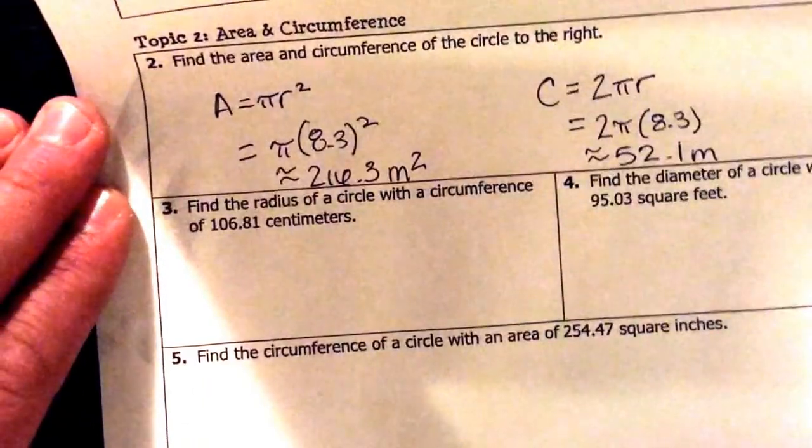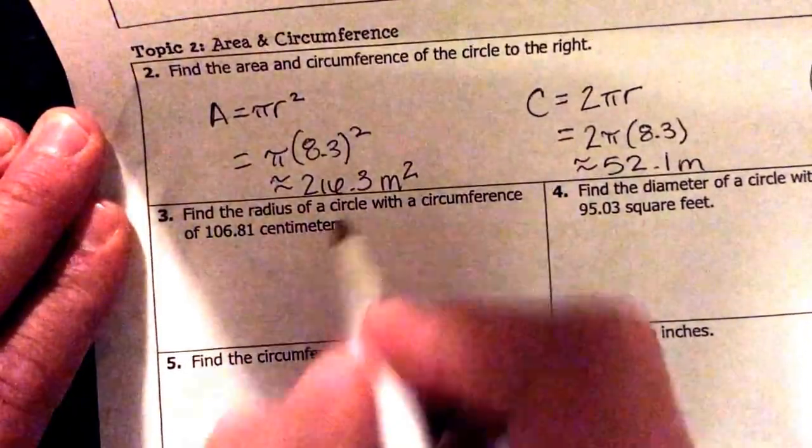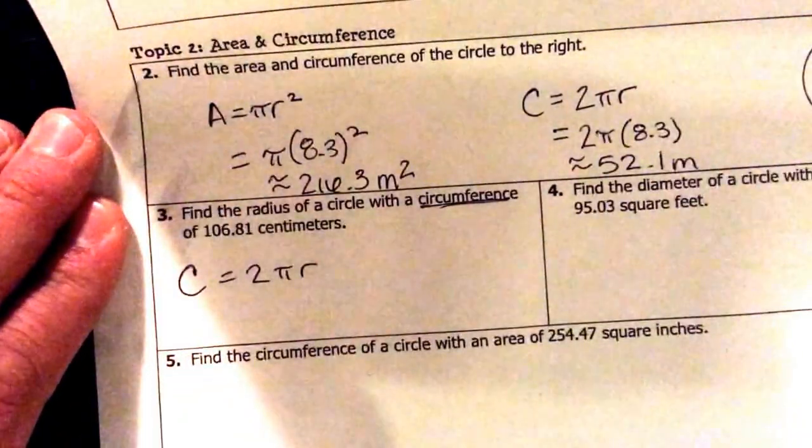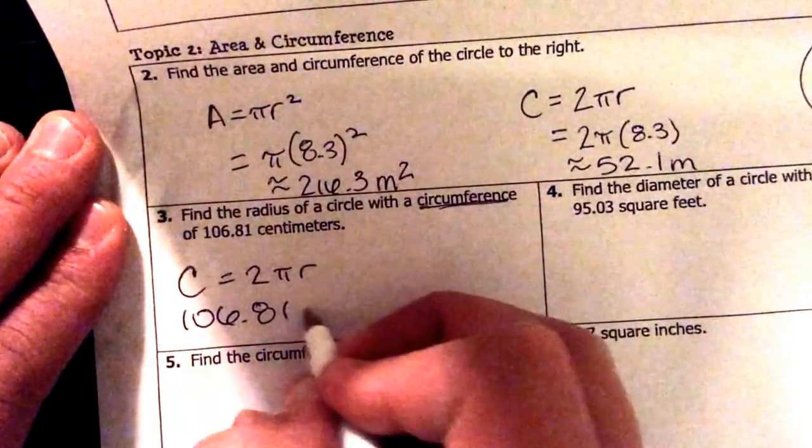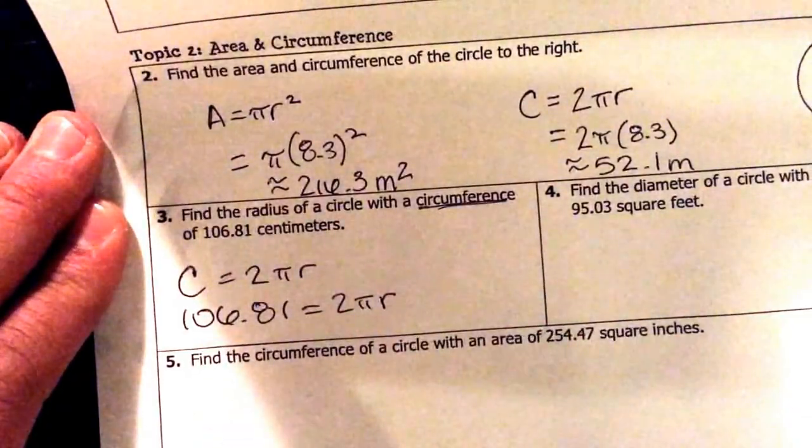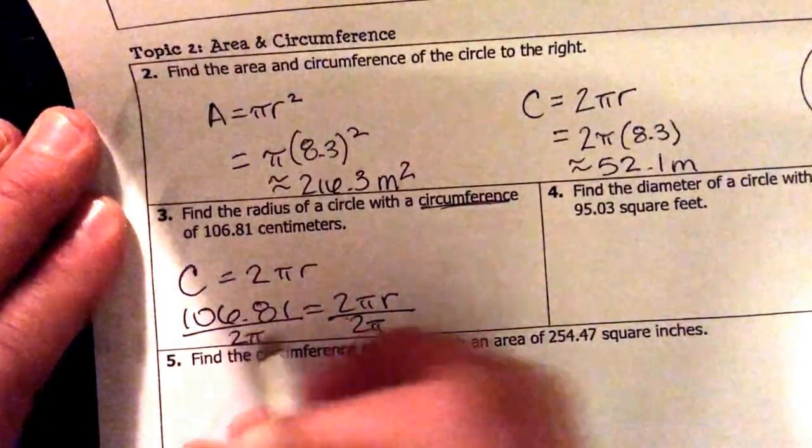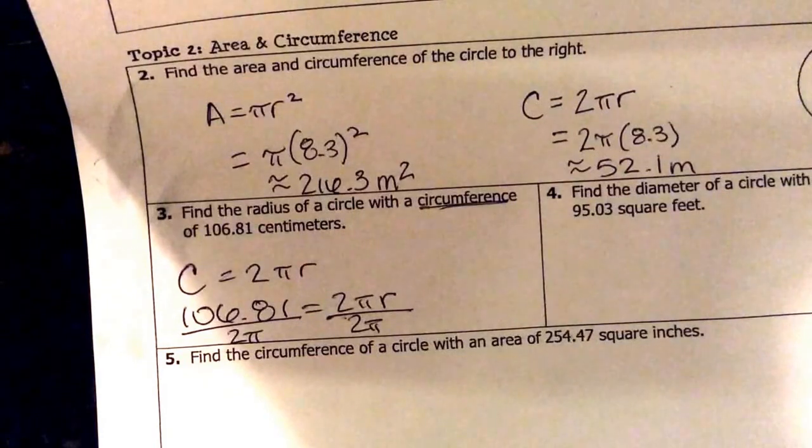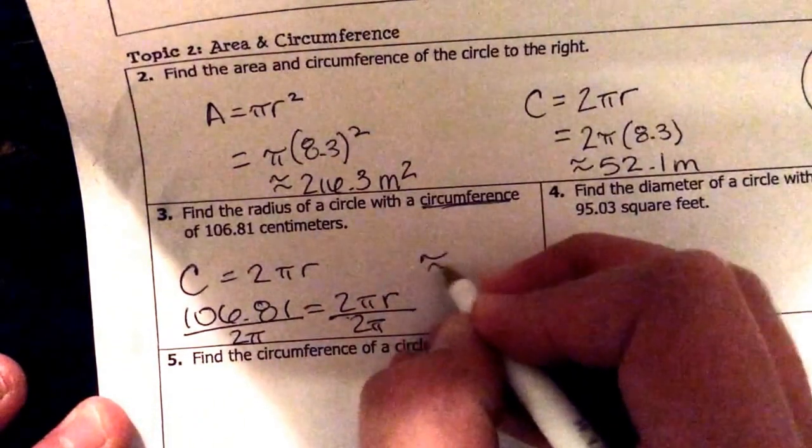Next question. Find the radius of a circle with circumference of 106.81 centimeters. So we're looking for the radius. They're giving us circumference, so we're going to use circumference formula. The circumference they're giving us is 106.81. Equals 2πr. Let's go ahead and to get our r, we're going to divide by 2π. It's going to be approximately 17 centimeters.